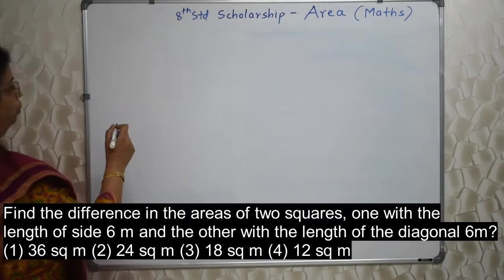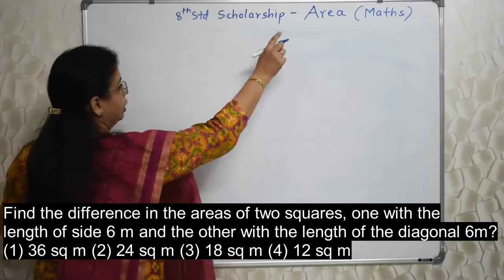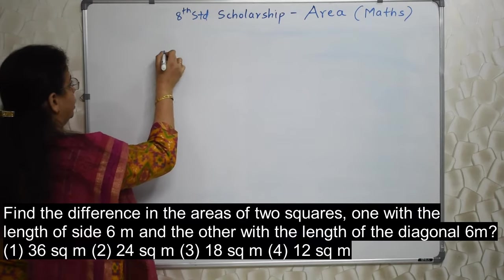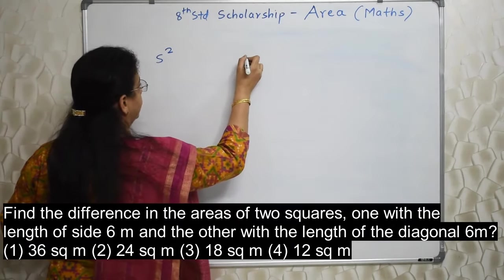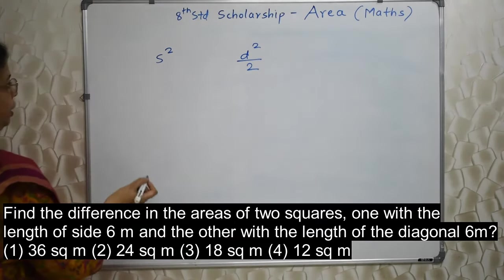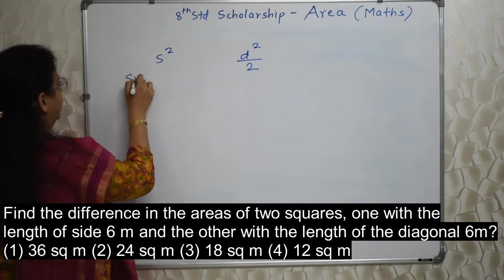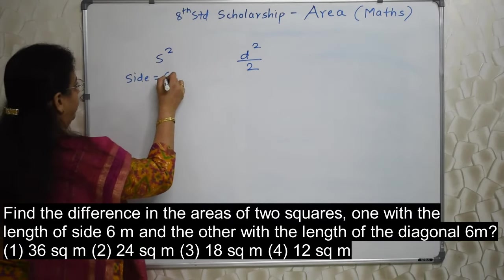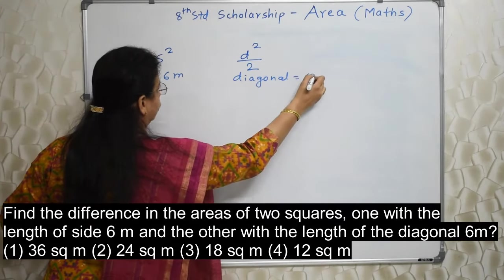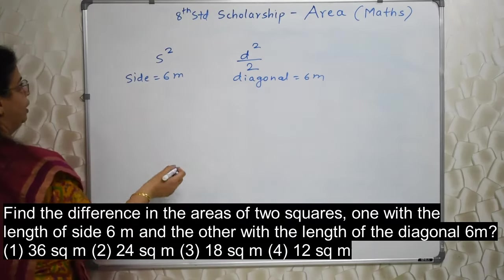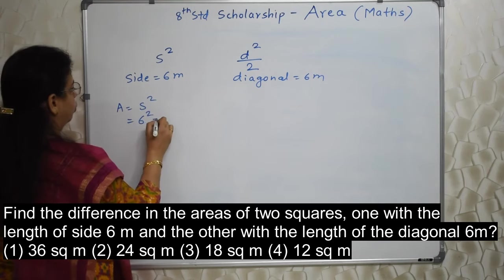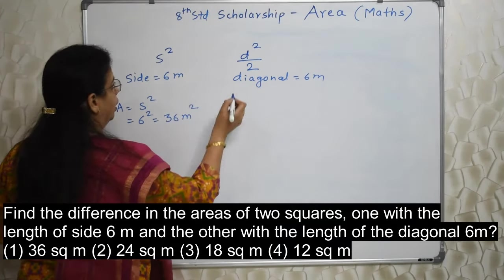See students, I told you, all this area is based on formula. Area of a square is side square. Our other formula of area is diagonal square upon 2, depending on what is given. Here in this case there are 2 squares with side 6 meter and another one is diagonal 6 meter. So obviously, accordingly we will change the formula. Here area will be side square, so 6 square, so 36 meter square.